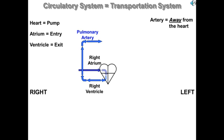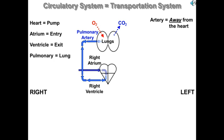The first artery that blood leaves from the right ventricle is called the pulmonary artery. The word pulmonary refers to our lungs, so blood in the pulmonary artery is going to the lungs — and you would be correct. This is very low oxygen blood going to the lungs, where oxygen will be diffusing into the blood and carbon dioxide will be diffusing out of the blood. Your lungs are where your blood gets oxygen and where carbon dioxide wastes are removed.